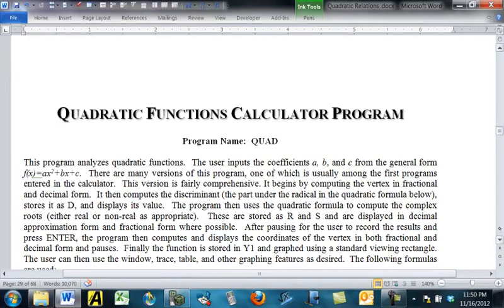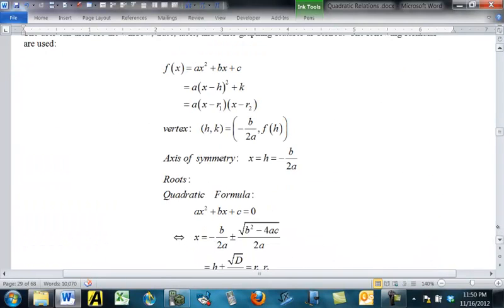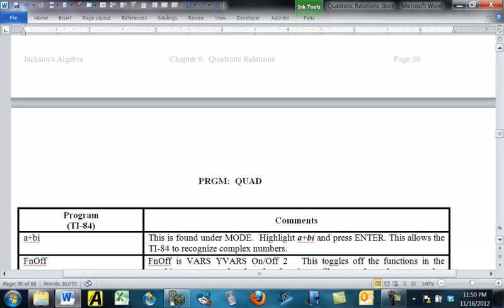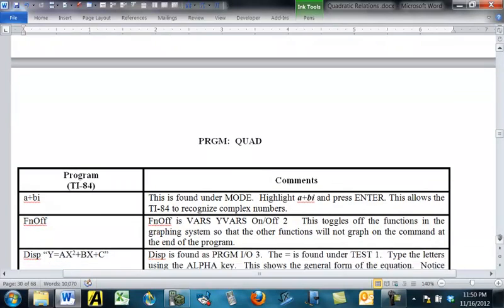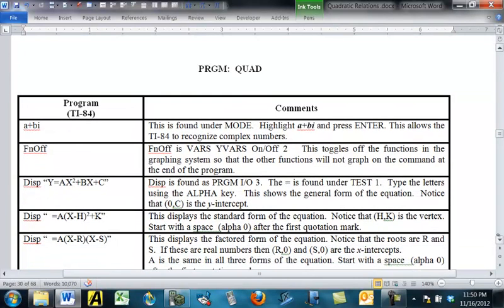Now notice these things are straightforward enough. They can be programmed into a calculator. Here's a program that I call Quad that works this out. There are many different versions of a quadratic functions formula program out there. But this is a version for a TI-84. Over here is what you're going to enter in in this column. We have comments over here on the right. And comments tell you where to find things.